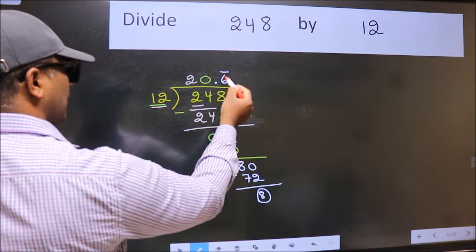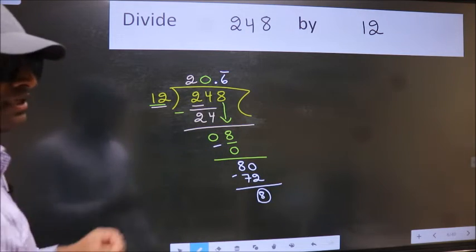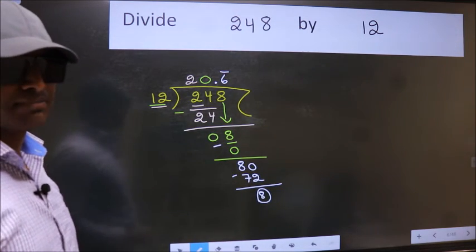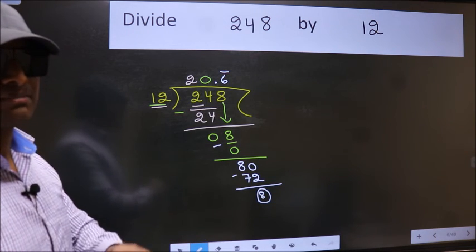That means we get bar on this number. Did you understand where does the mistake happens? You should not do that mistake.